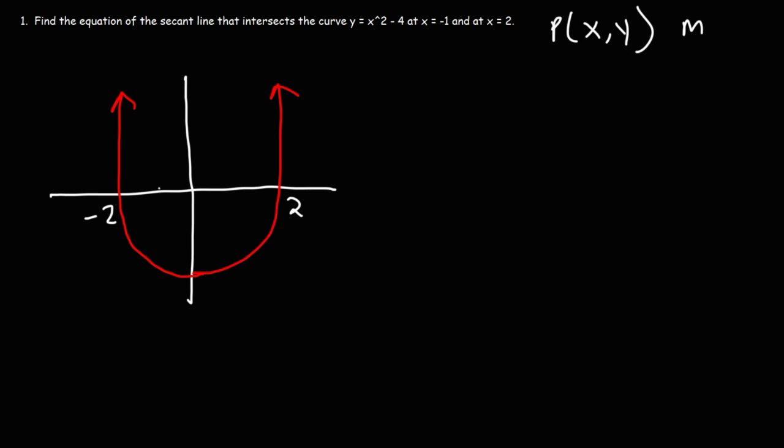Now we're interested in finding the equation of the secant line that intersects the curve when x is negative 1 and when x is 2. So when x is negative 1, the curve is there. And when x is 2, that's the x-intercept. So the secant line is a line that touches the curve at two points, or rather it intersects the curve at two points.